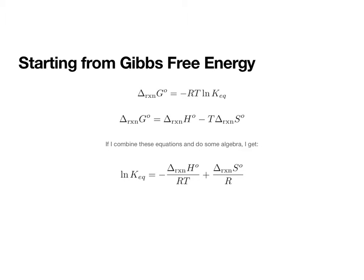Okay, so if we start from our Gibbs free energy, we know that delta G is equal to minus RT ln K. We also know that delta G is equal to delta H minus T delta S. Most likely, these have been etched into your memory from biochem, but also gen chem as well. If I combine these equations and do a little bit of algebra, I get that the natural log of K is equal to delta H over RT plus delta S over R.